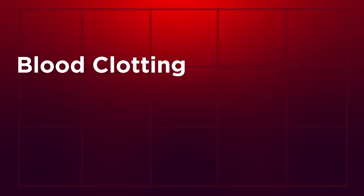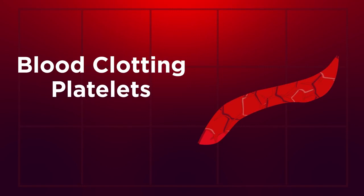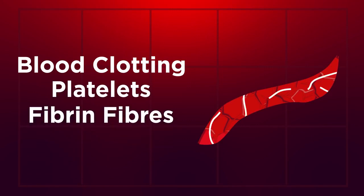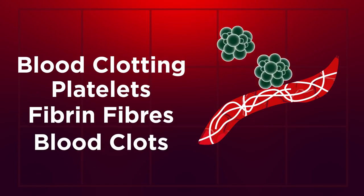So from this video, you should understand the magic of blood clotting. Platelets are first to the scene, closely followed by the fibrin fibers. Our blood clots so that we don't lose a lot of blood, and don't let lots of nasty pathogens into our body if we cut ourselves.